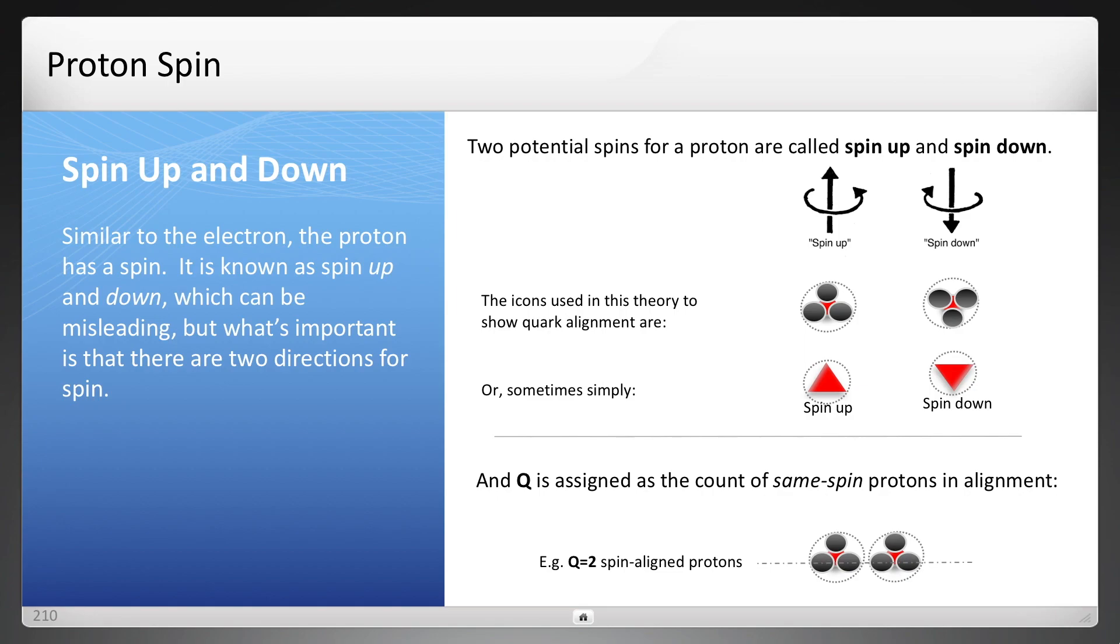And another thing is q is now assigned, just a generic q, is assigned to the count of spin protons in alignment. So for example, two spin up protons in alignment or two spin down. You can see that dashed line is a wave now going through multiple different quarks of the same spin of protons.